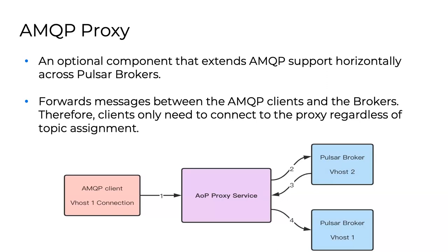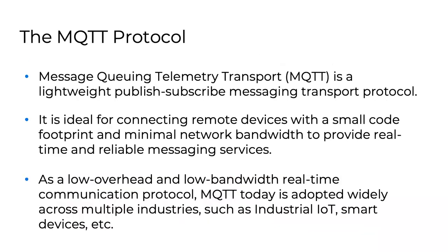In Pulsar, like other distributed messaging systems, topics can move around — they're not pinned to one broker forever. If a broker goes down or becomes a hotspot, Pulsar will move the topic to another broker. The proxy tracks this for you so your data doesn't get pinned to one particular broker — the proxy is aware of that and handles it automatically.